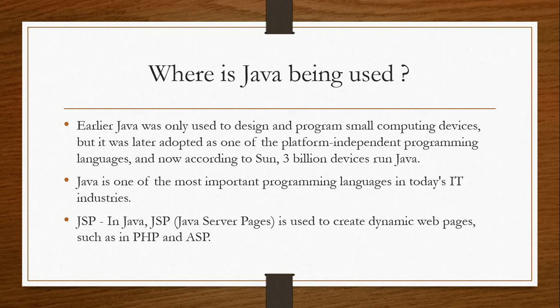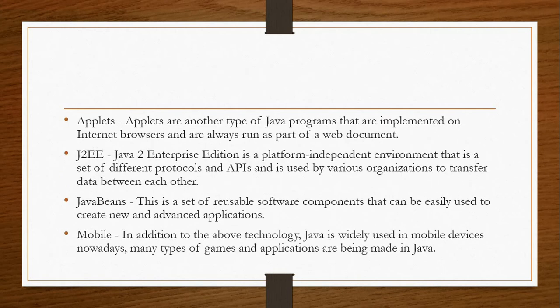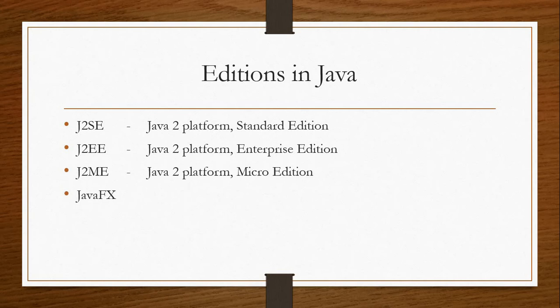Java applications include mobile applications, desktop applications, web servers, embedded systems, scientific applications, enterprise applications, and desktop GUI. These are the main types of applications you can build using Java.